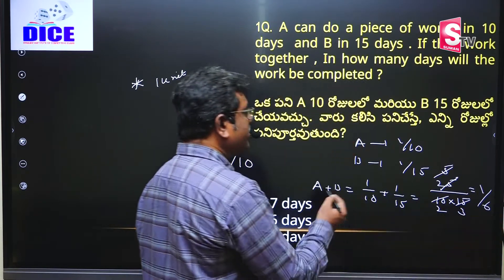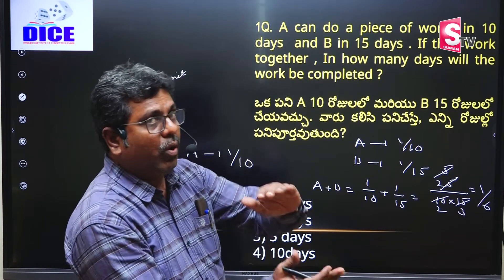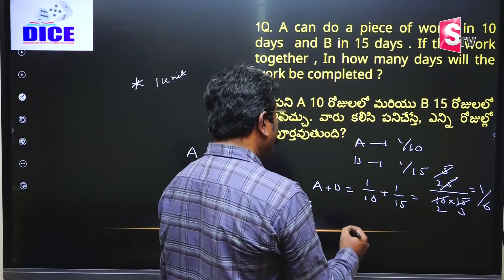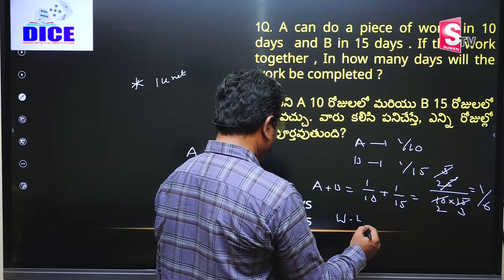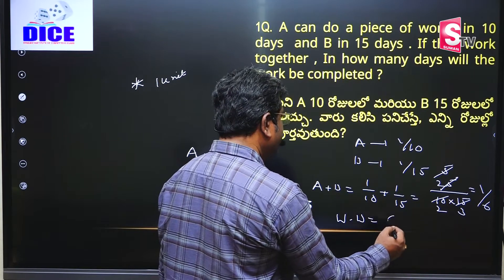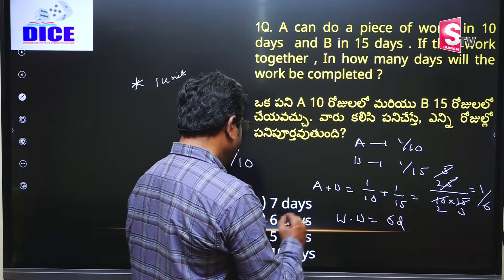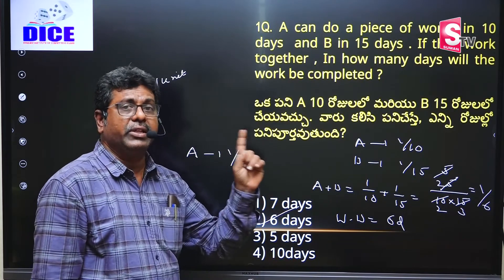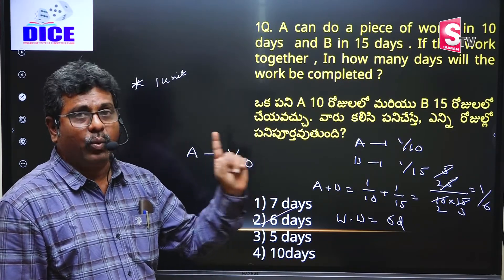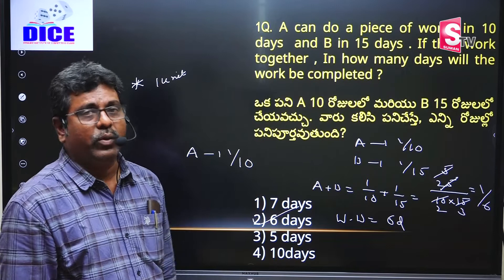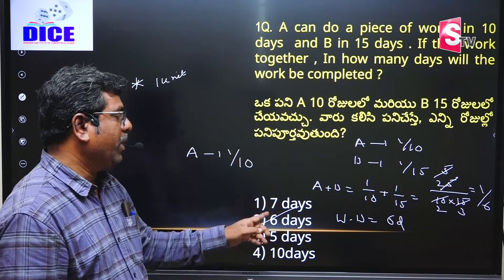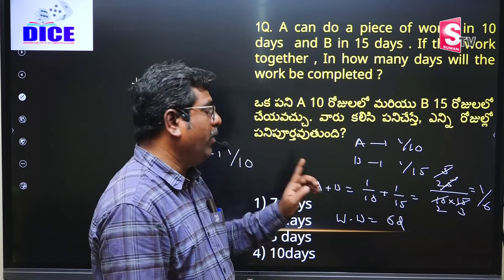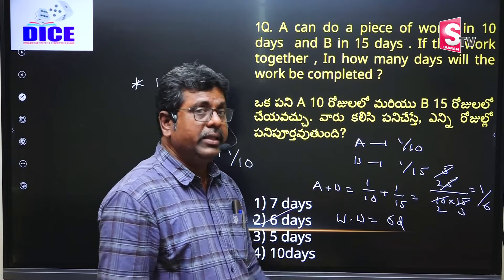A plus B's one day's work is 1/6, so for the whole work we reverse the fraction. Therefore the whole work W equals 6 days — that is the required answer. This is the basic model of Time and Work, and there is a 100% chance of getting this in the Group 4 and Group 2 examinations. You have to write down the one day's work — this is one method.